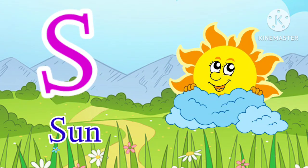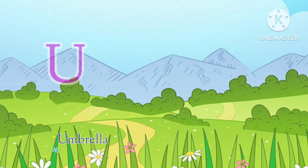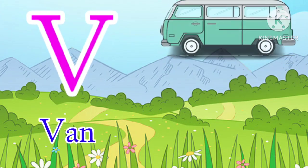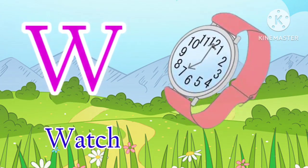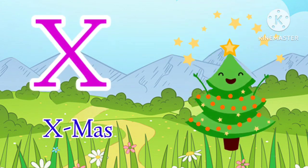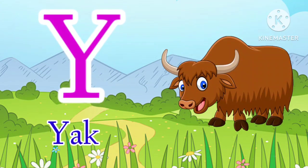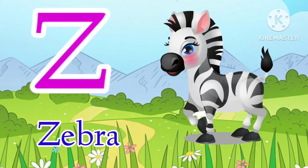S for sun, T for tiger, U for umbrella, V for van, W for watch, X for xmas, Y for yak, Z for zebra.